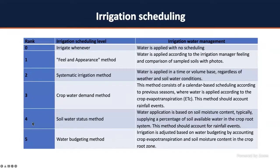Finally, ranks three, four, and five are what I will focus on today: crop water demand, soil water status, and water budget methods. These are the more advanced scheduling methods, and I would like you to understand how they can benefit your home garden or commercial field.